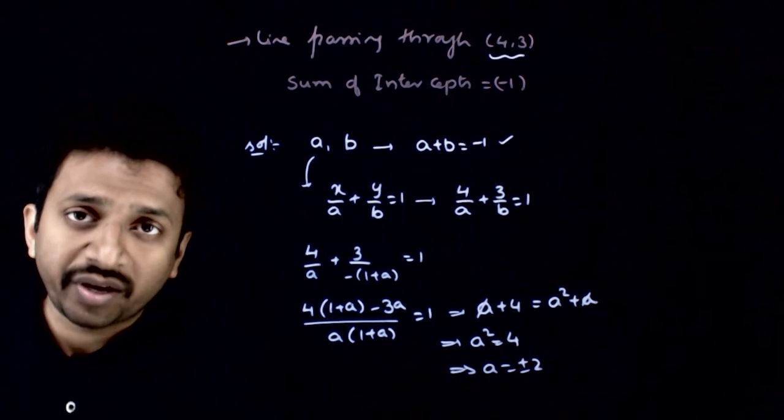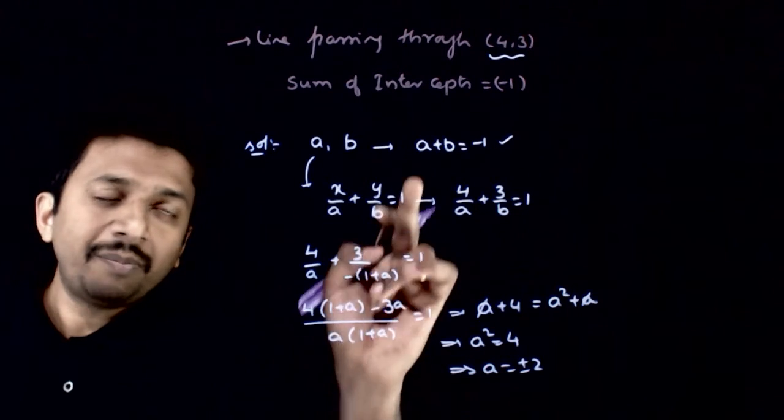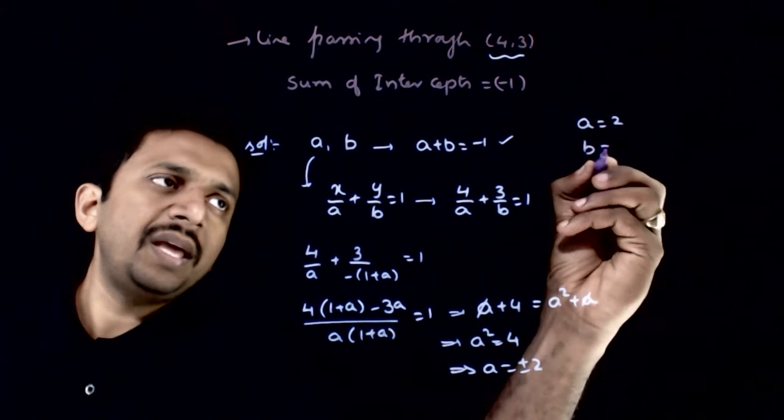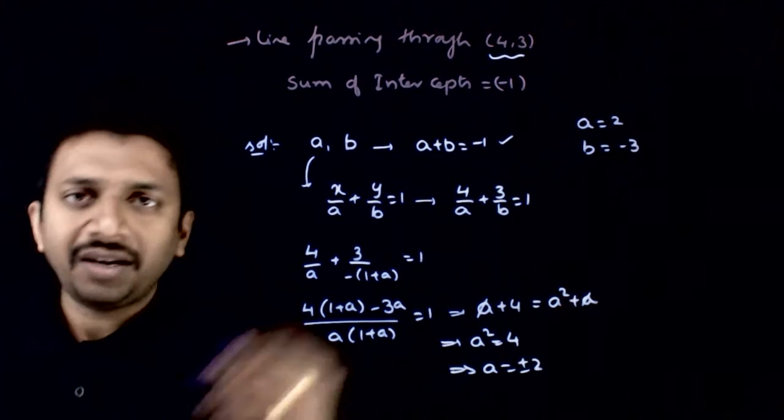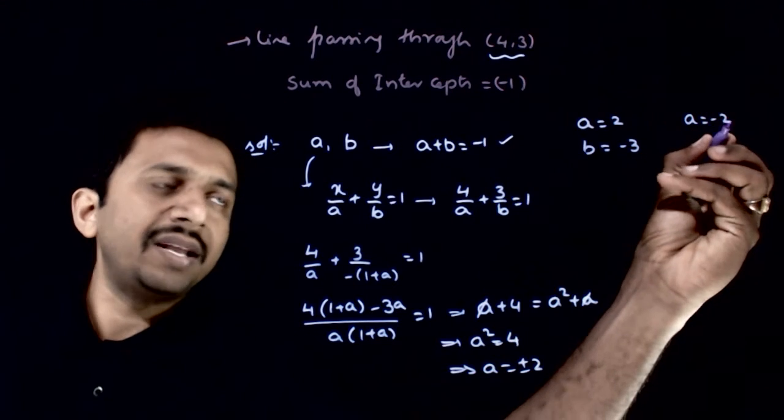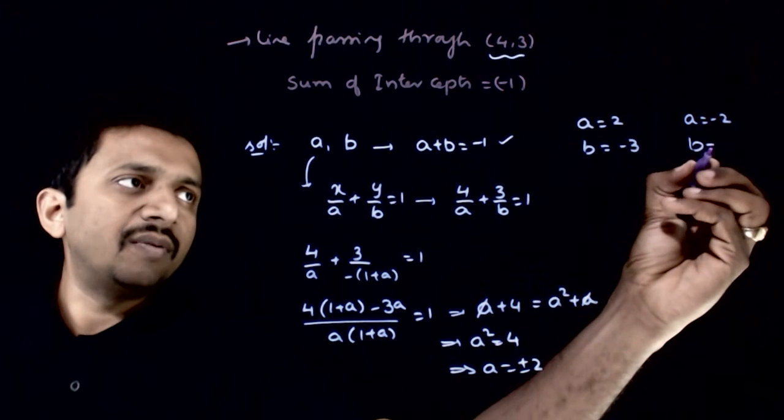You have two possible values for a. a can be plus 2 or minus 2. If a is equal to 2, b has to be equal to minus 3, because a plus b is equal to minus 1. And if a is equal to minus 2, b is equal to plus 1.